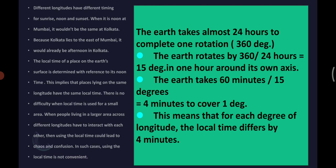Because Kolkata lies to the east of Mumbai, it would already be afternoon in Kolkata. The local time of a place on the earth's surface is determined with reference to its noon time. This implies that places lying on the same longitude have the same local time.